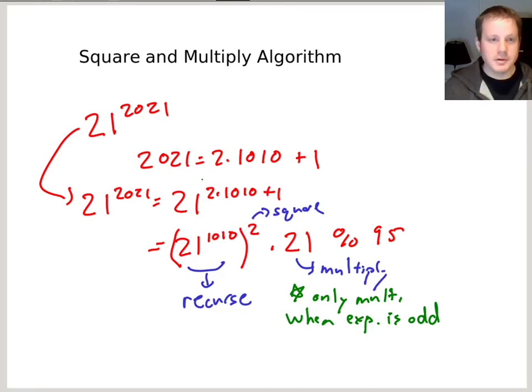So as a recurrence, what's the cost of this? Is something like a little bit of a square and a multiply plus one recursive call of size exponent over 2.